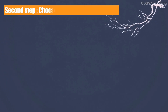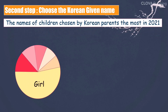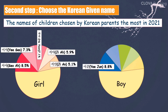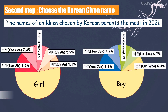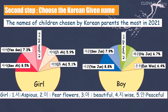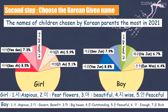Now you have to choose a given name. Let's choose the names that Korean parents gave most to their babies in 2021 — the top 5 names for girls and top 5 names for boys. You can choose one of these, or mix syllables to make a different name. For girls, syllables meaning 'wise' and 'pretty' were mainly used. The word 'excellent' was especially used for boys. In common, the meanings of 'auspicious' and 'rich' are used a lot.